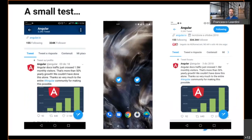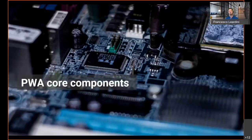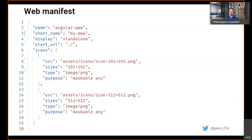The one on the right side is the PWA and on the left side is the native app. Congratulations to those who got it right. Let's move now to analyze which are the core components behind progressive web apps. The first one we will analyze is the Web Manifest. The Web Manifest is a JSON file that defines how our progressive web app will be rendered once installed on the user's device.